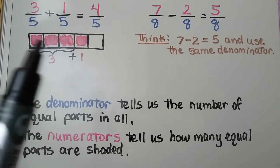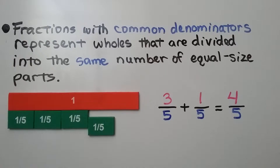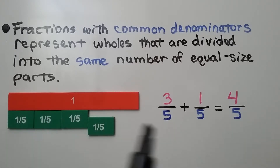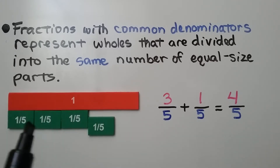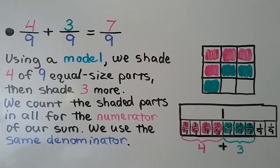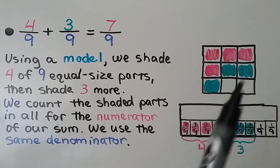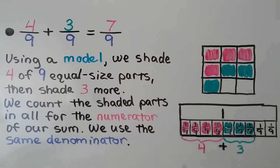Fractions with common denominators represent wholes that are divided into the same number of equal-size parts. If our equation is three-fifths plus one-fifth, we know there are five equal-size parts for one whole — we're adding three of them plus one more to get four-fifths. For four-ninths plus three-ninths, using a model we shade four of nine equal-size parts, then three more, and count all the shaded parts for the numerator of our sum — there are seven.